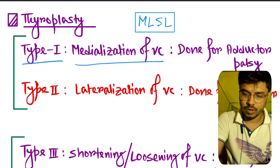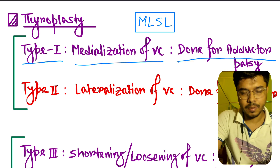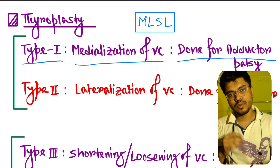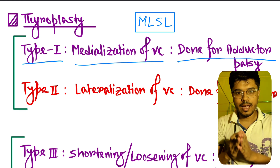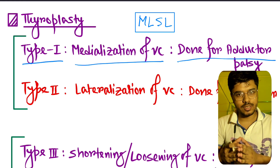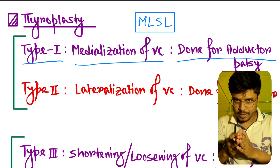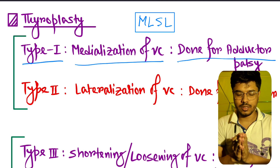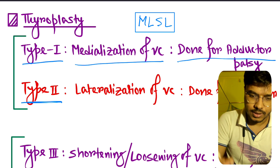Type 1 thyroplasty is the medialization of the vocal cord. It is done for adductor palsy. If the adductors of the vocal cords are paralyzed, then the vocal cord is in the abducted position, so we have to medialize it — that is Type 1 thyroplasty.